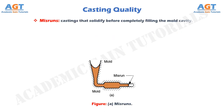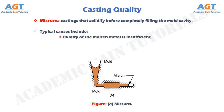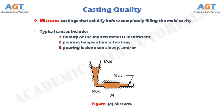Misruns are castings that solidify before completely filling the mold cavity. Typical causes of misruns include: fluidity of the molten metal is insufficient, pouring temperature is too low, pouring is done too slowly, or the cross section of the mold cavity is too thin.